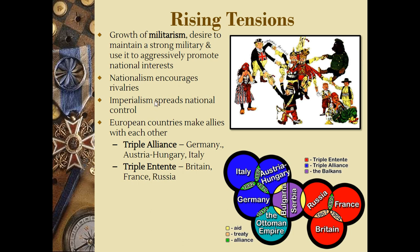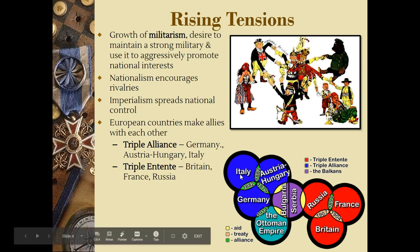Because of all this rising tension and especially because of the growth of militarism, European countries start to make alliances. This is another one of our main causes. Two major alliances emerge in Europe: we have the Triple Alliance — Germany, Austria-Hungary, and Italy — and then we have the Triple Entente — Russia, France, and Britain.